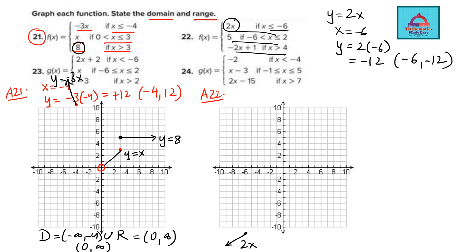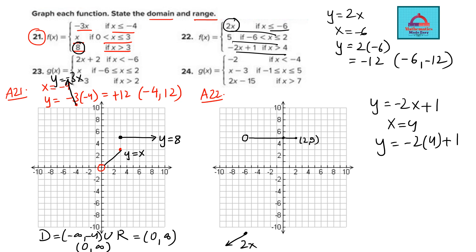Next is y equal to 5, valid from x equals minus 6 — open — to x equals 2. There is an open dot at minus 6, and at x equal to 2 the point is 2 comma 5. The third piece is y equal to minus 2x plus 1 for x greater than 4. At x equal to 4, y equals minus 2 times 4 plus 1, which is minus 8 plus 1, so minus 7. The point is 4 comma minus 7 with an open dot since equal to is not included. The graph extends from that open dot.